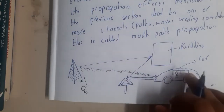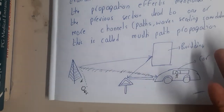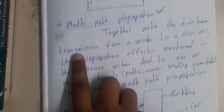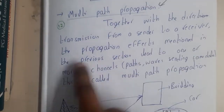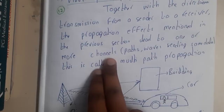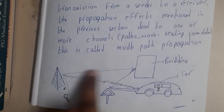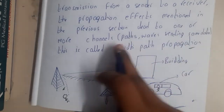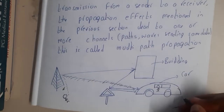Since the signal is reflecting multiple times, it gets multiplied, and the user ends up getting multiple copies of the same data again and again, which can be misleading. This is how multipath propagation works — sending the same data through multiple paths. Together with the propagation effects discussed in the previous session, this leads to one or more channels carrying the same data.